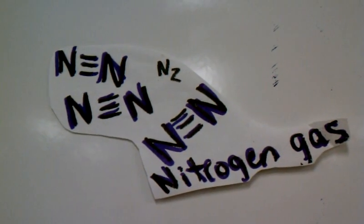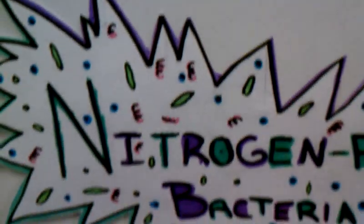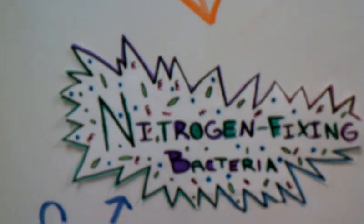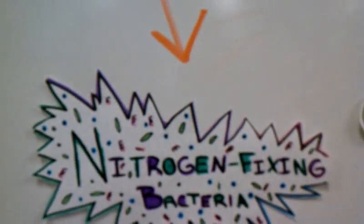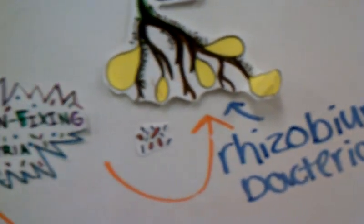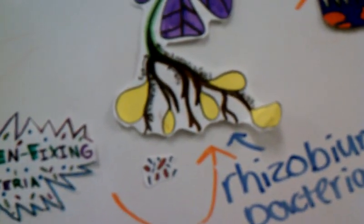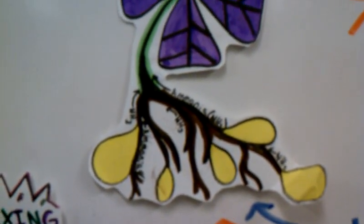Nitrogen gas in the air goes into the soil where it can live in two different bacteria: cyanobacteria and rhizobium bacteria. The rhizobium bacteria in the plant nodules, through nitrogen-fixing bacteria, can assimilate into the plant.